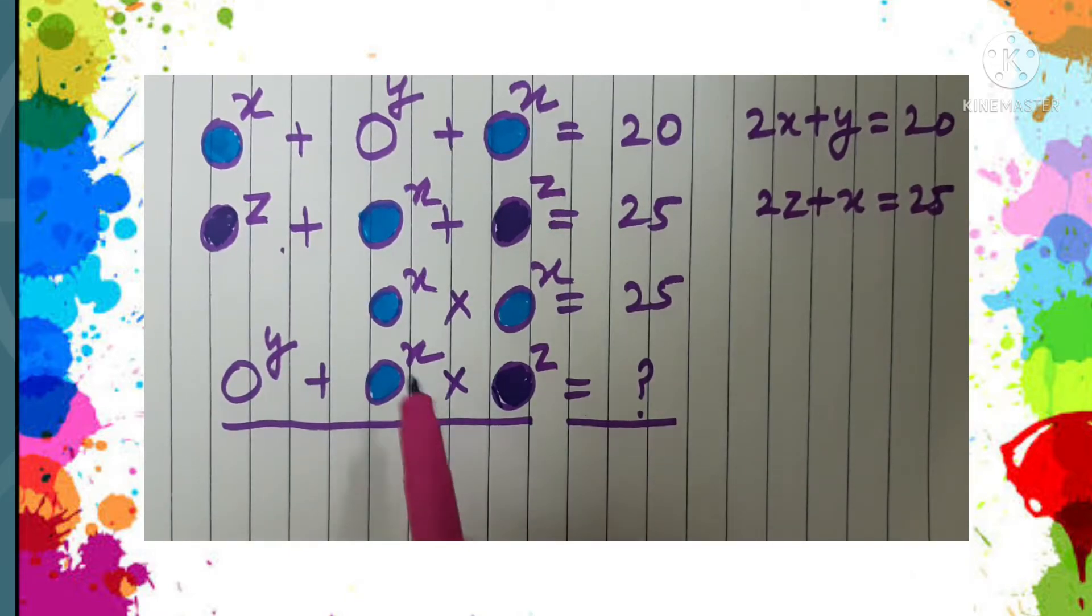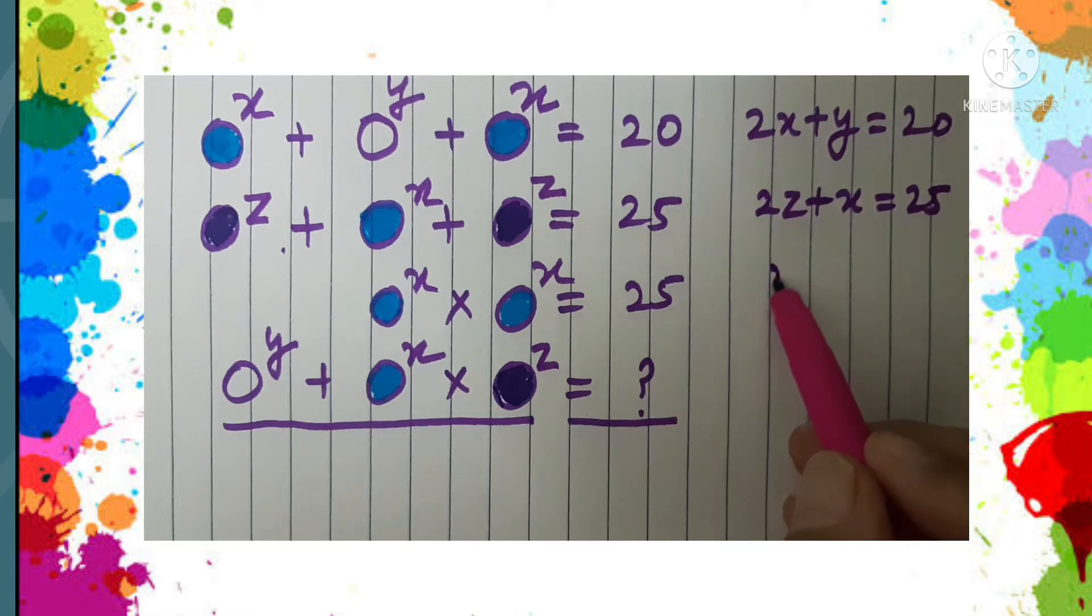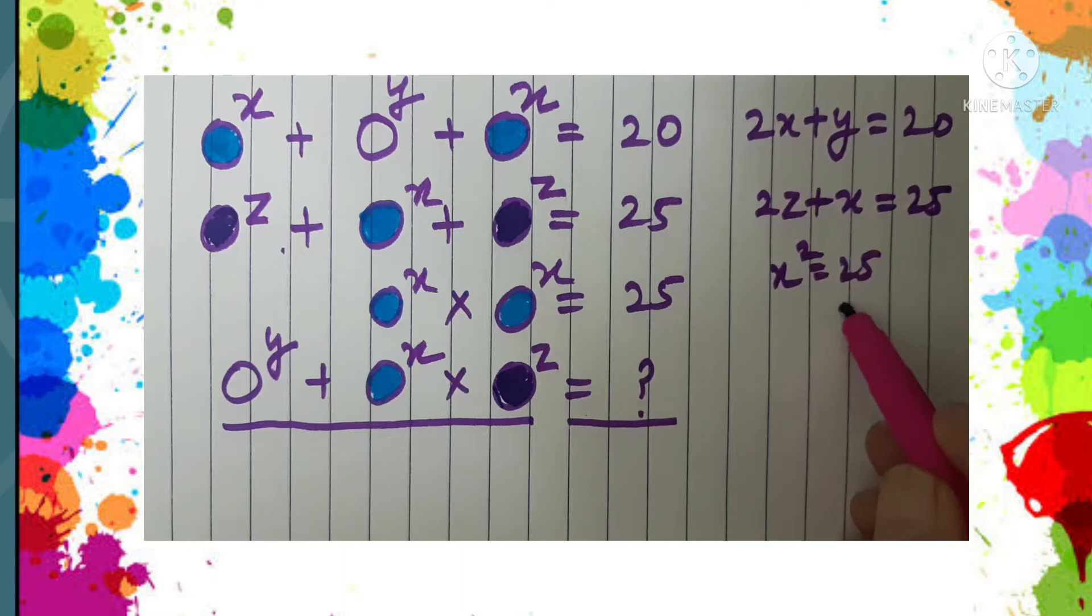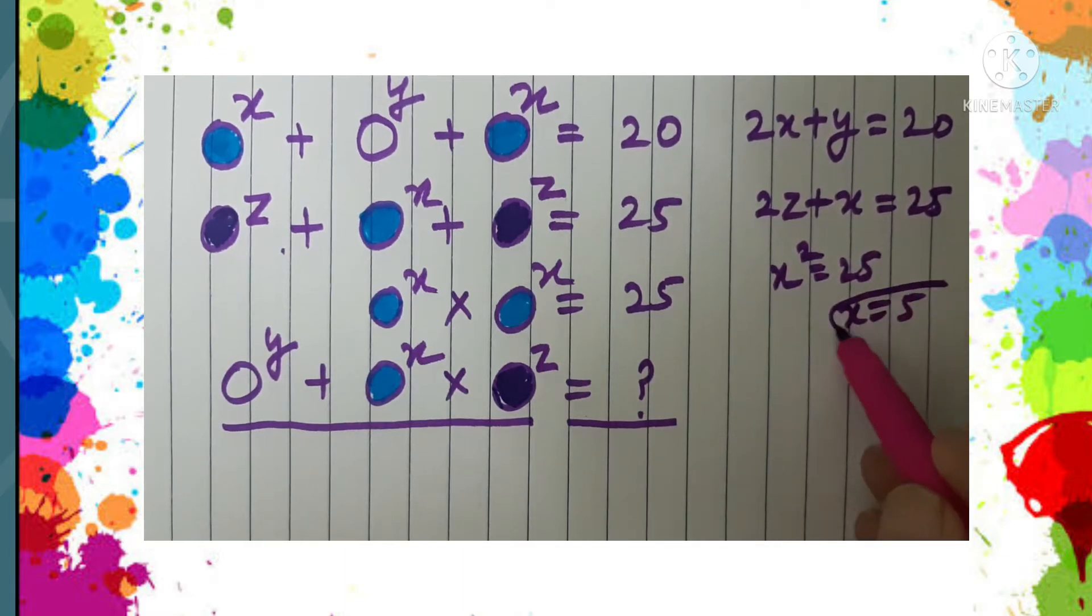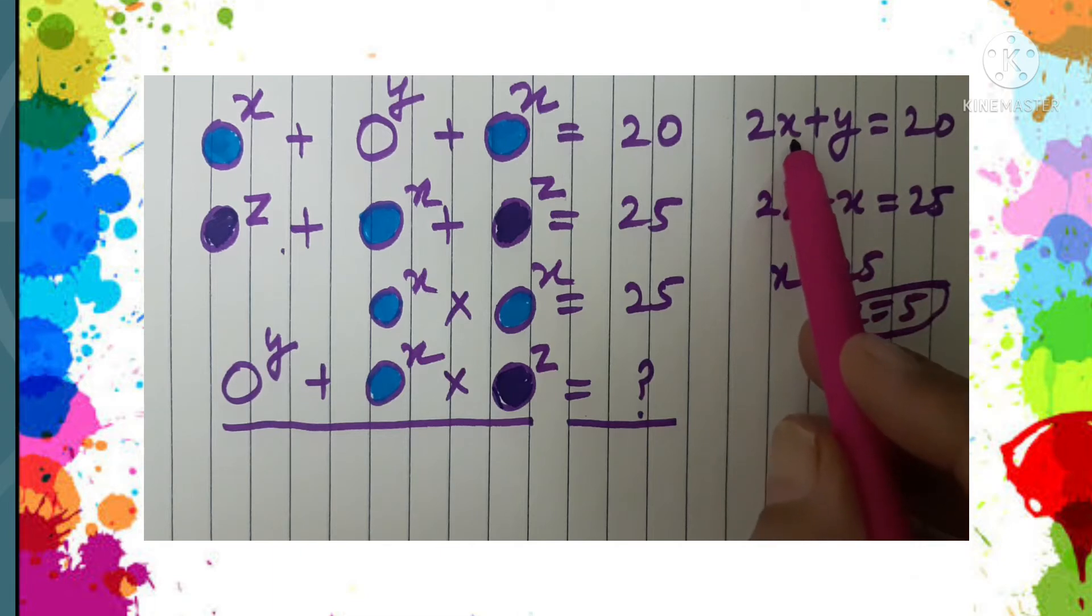Here we are taking the positive value, so X will be equal to 5. So when X is 5, from the first equation we can find the value of Y, isn't it?